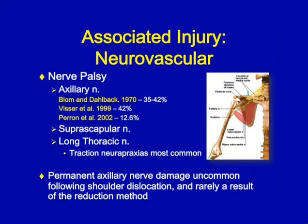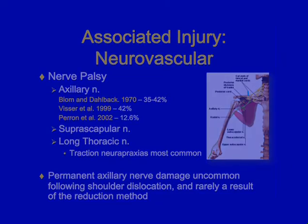Getting into neurovascular structures, nerve palsy is somewhat of a common occurrence. However, any permanent nerve damage is really a rare occurrence in these typical anterior subcoracoid dislocations. The axillary nerve has been shown by multiple studies to be the primary nerve affected. As the humeral head luxates anterior, medial, and inferior, it can abut against the axillary nerve causing a traction-type injury or neuropraxia. These traction neuropraxias are most common, but they can also occur in the suprascapular and long thoracic nerves. The axillary nerve, however, has been shown to be the most prevalent.